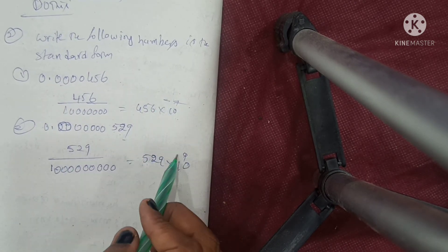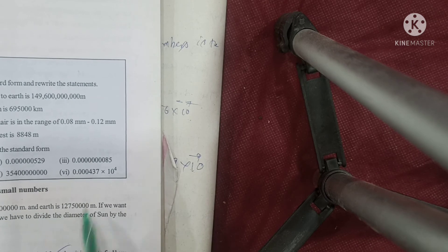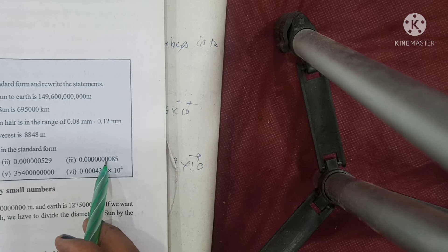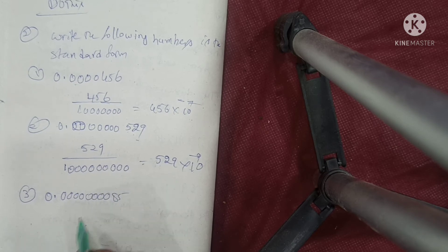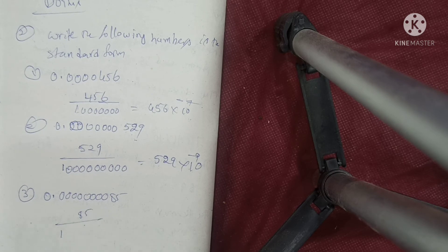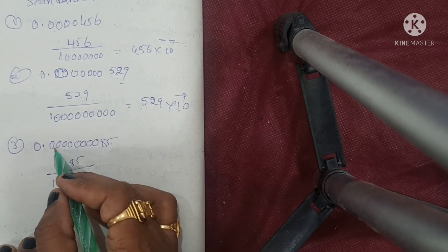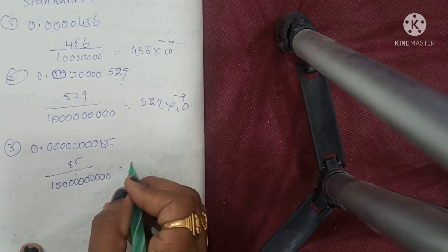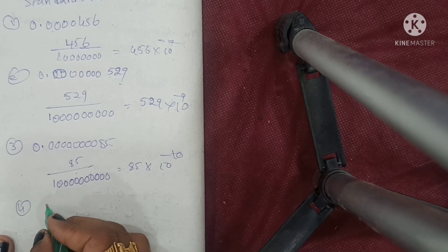These are all minus values. Third one: 0.0000000085. Counting after decimal point: 1, 2, 3, 4, 5, 6, 7, 8 — so 8.5 into 10 to the power of minus 10. Simple.